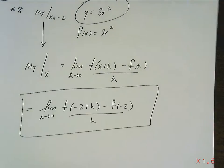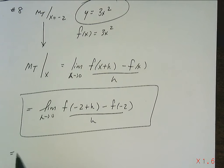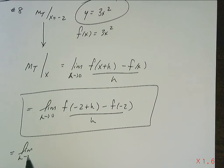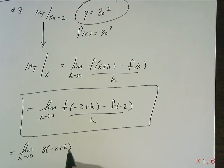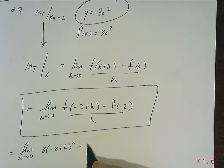So now our function is 3x squared, so it's going to be the limit as h approaches 0 of 3 times negative 2 plus h squared minus 3 times negative 2 squared over h.